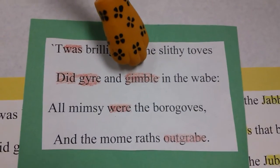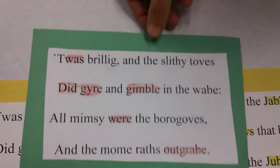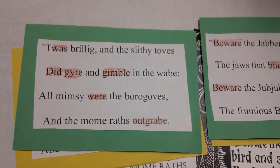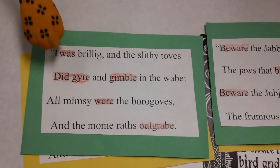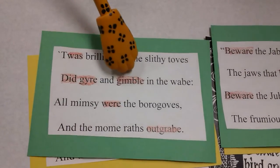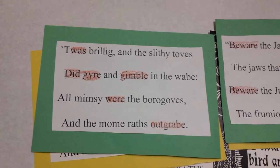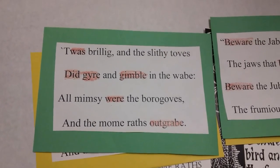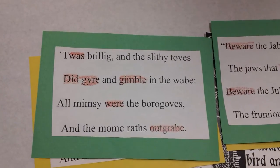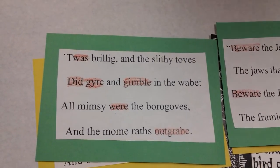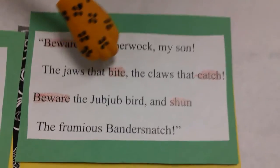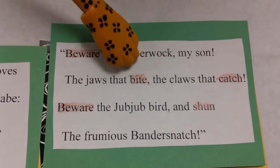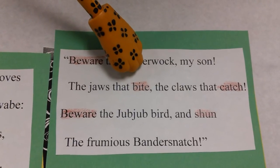Next, how can we tell when something is a verb? A verb tells us what the subject is doing or how it is feeling. Like we mentioned before, how do we know did gyre and gimble are verbs? Both gyre and gimble are the action toves are doing. This reinforces how we know toves are a noun, because nouns do something. Let's look at the line, the jaws that bite. We know jaws is a noun because it is a thing that is biting. Also, we know bite is a verb because it is an action the noun is performing.